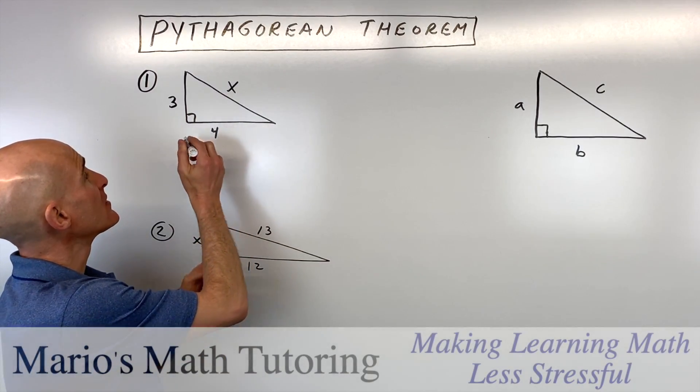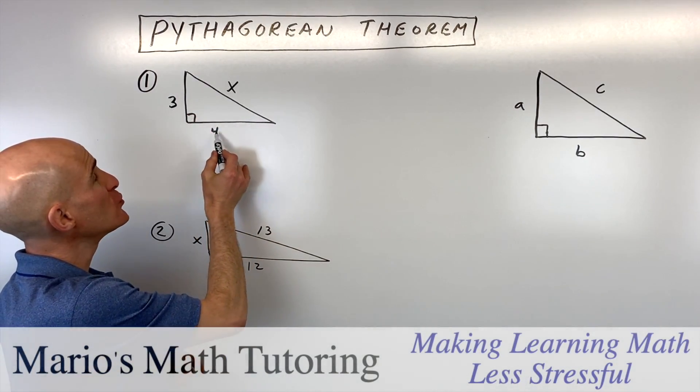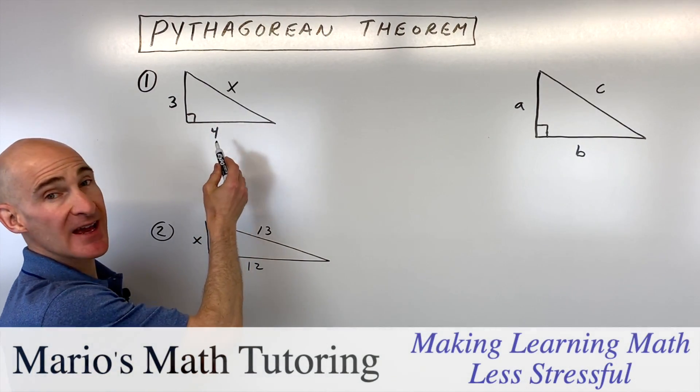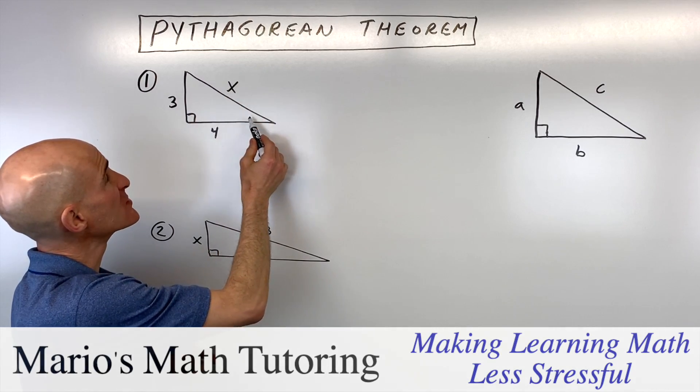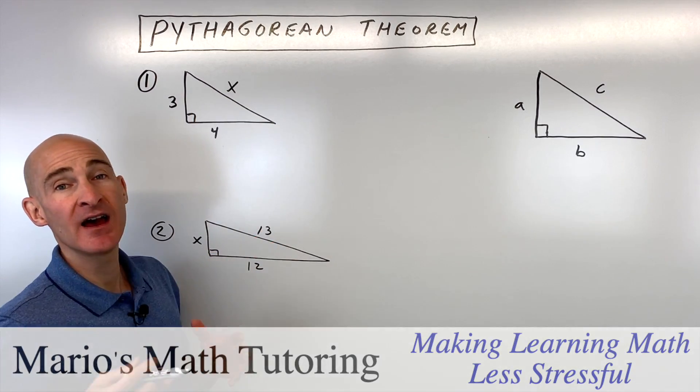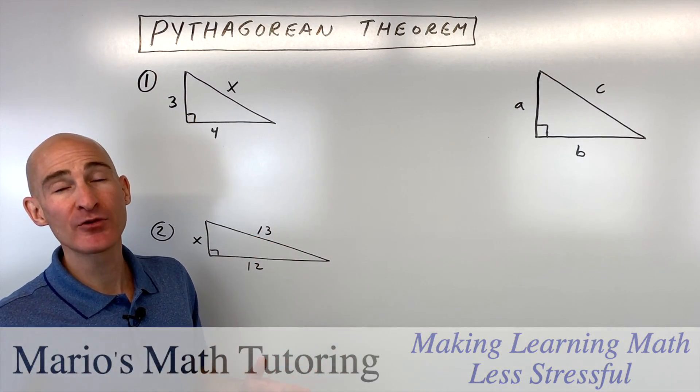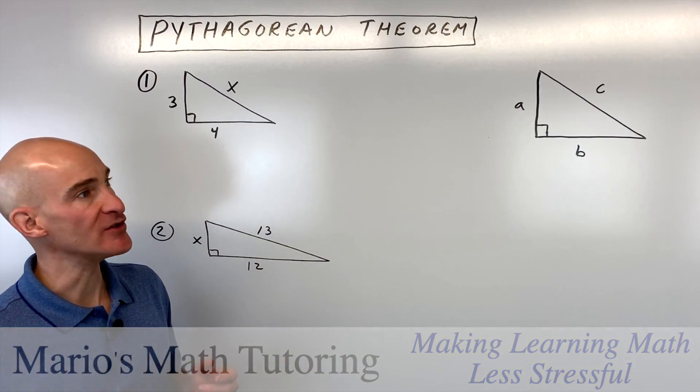You're given a right triangle like this and you have two of the sides of the right triangle and you want to find this third side — that's when the Pythagorean Theorem comes in.